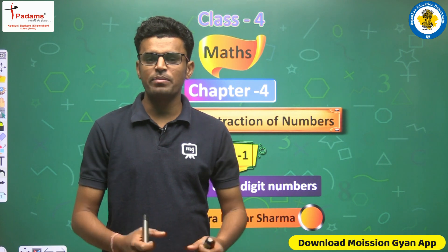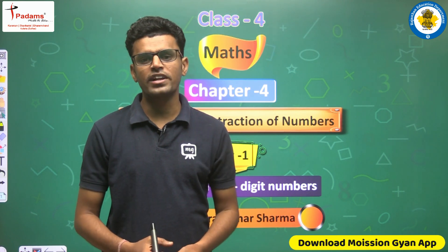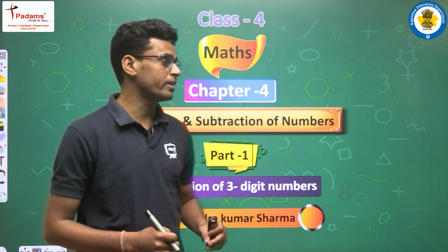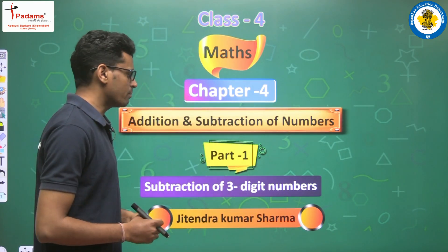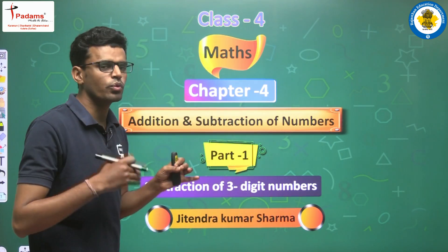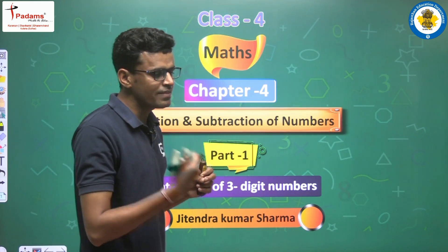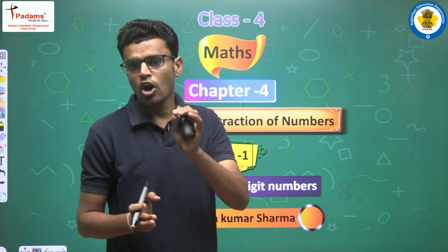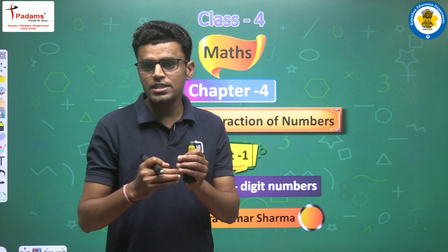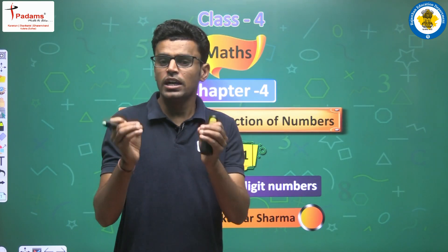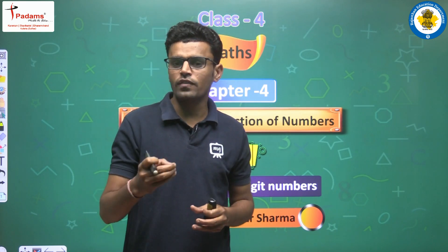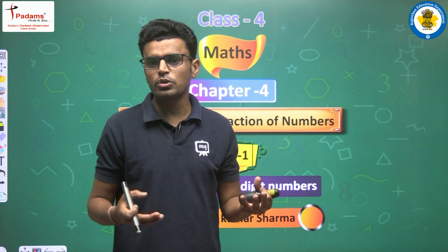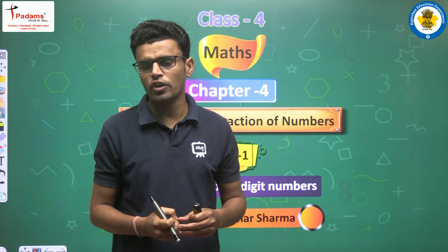Hello everyone, I am Jitendra Kumar Sharma, your math teacher. Today we will start our new chapter — Chapter 4 of Class 4. The chapter name is 'Addition and Subtraction of Numbers.' What is addition? In the previous class, that is Class 3, we learned about the basic knowledge of addition and subtraction. Addition is the process through which we can arrange numbers together — in short, we find the sum of different numbers.